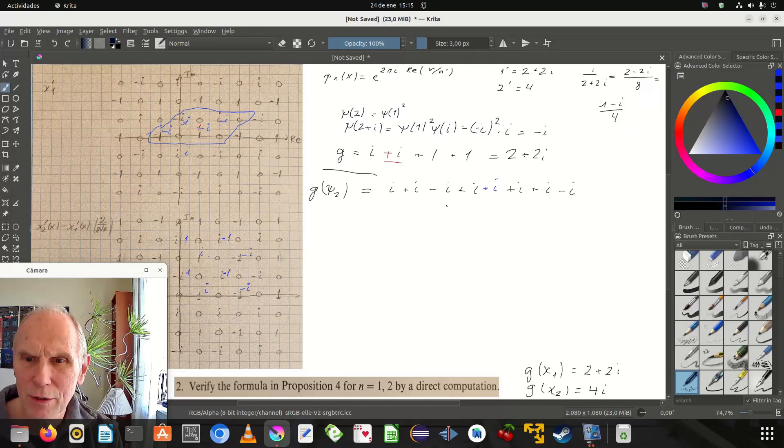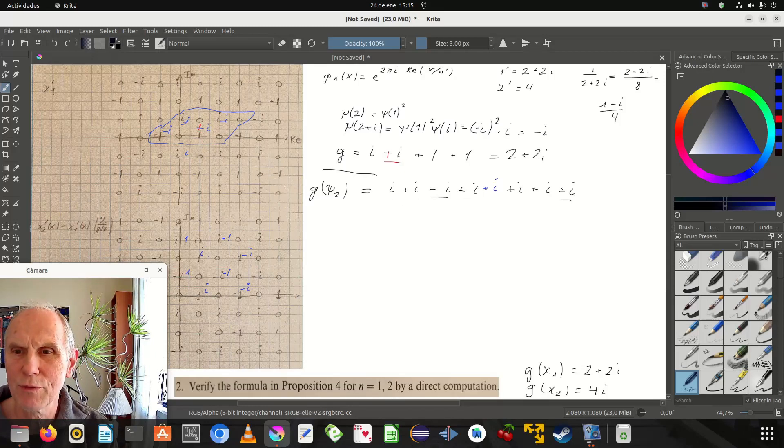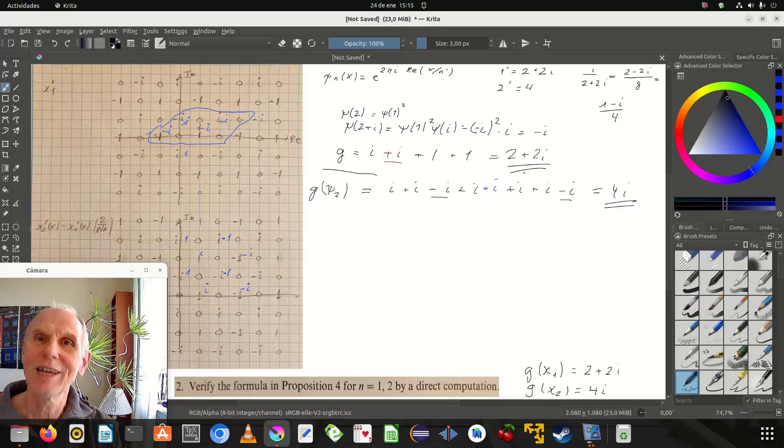All right, so we have minus two places and six beyond that, one two three four five six, so that gives four i. Right, that's it.